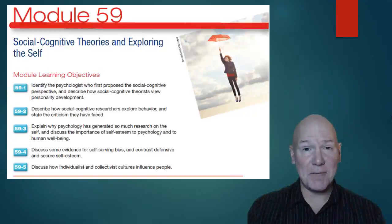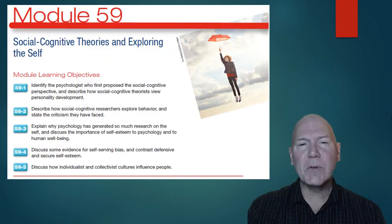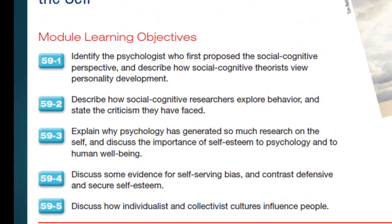This is our third and final video in the personality section. We've looked at the psychoanalytic perspective, the humanistic perspective, and the trait perspective. The psychoanalytic and humanistic basically explain how we develop our personalities, and the traits describe personality traits. Now we're going to move on into the social cognitive theories and exploring the self.